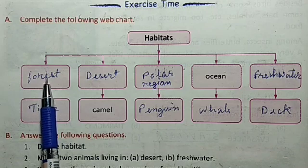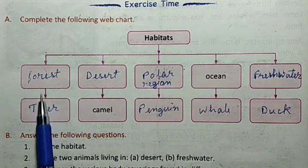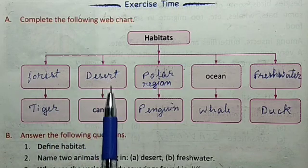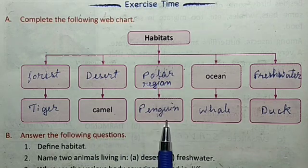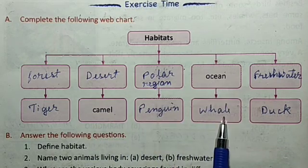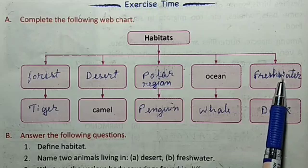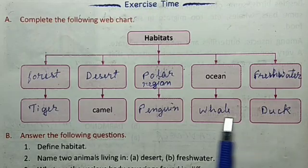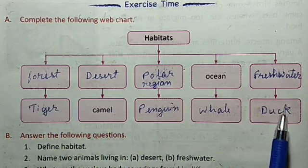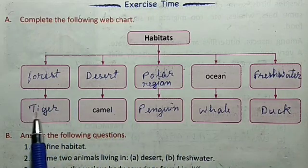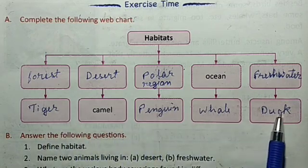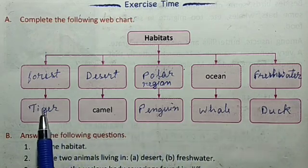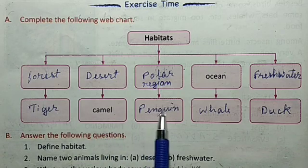Let's go to the forest — the survey of animals. For the forest habitat: tiger. Desert: camel. Polar region: penguin. Ocean: a sea animal. Fresh water habitat — let's look at the examples of what we have to do with these animals.